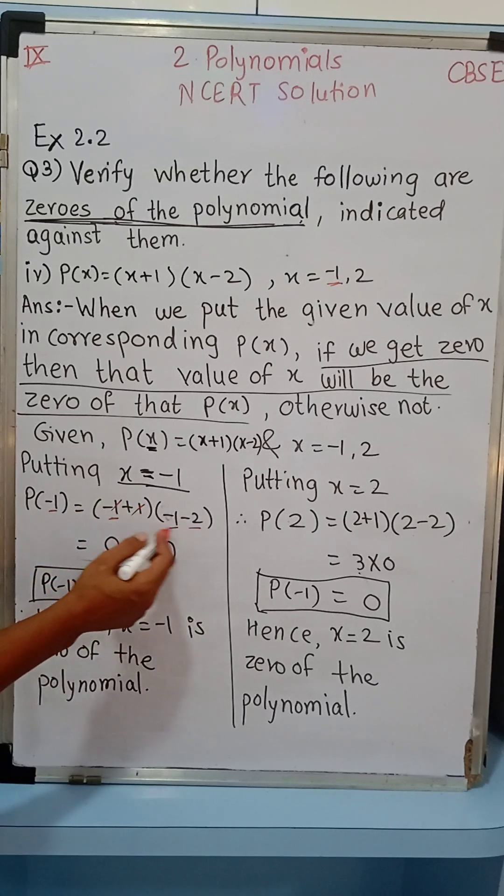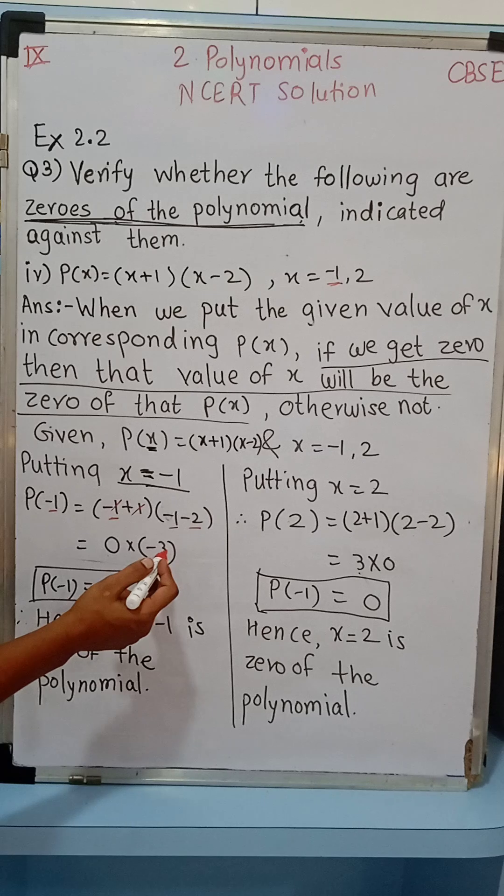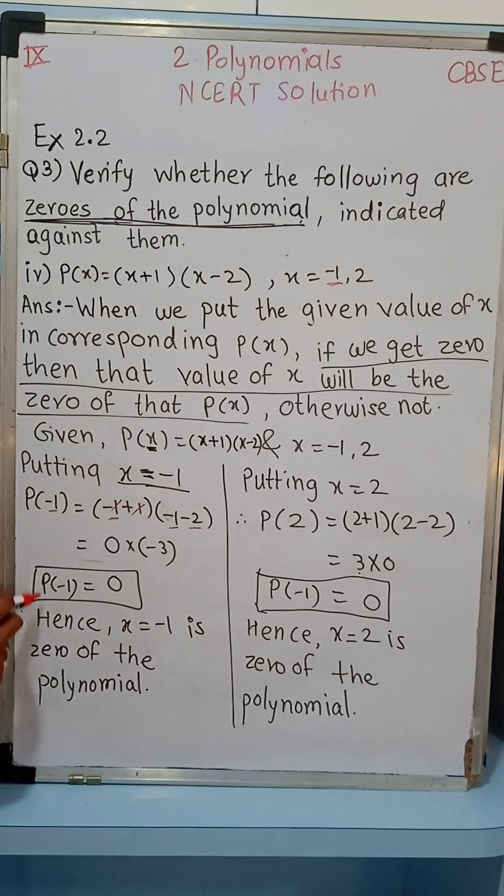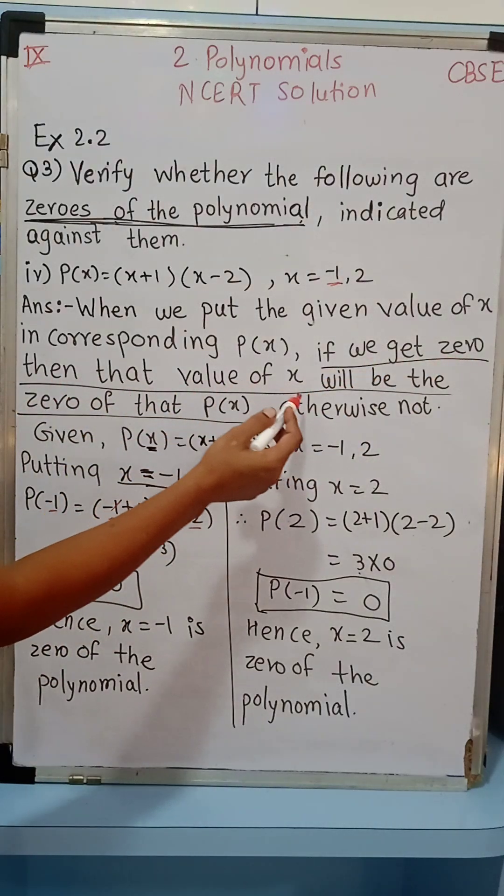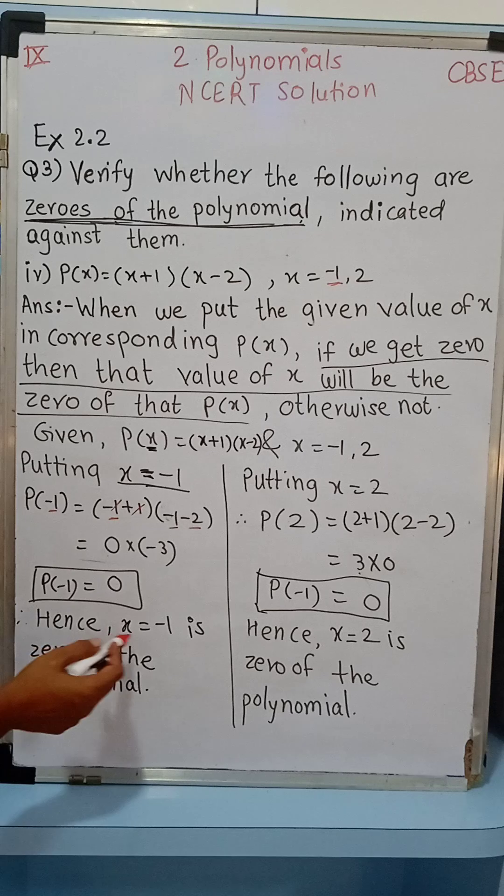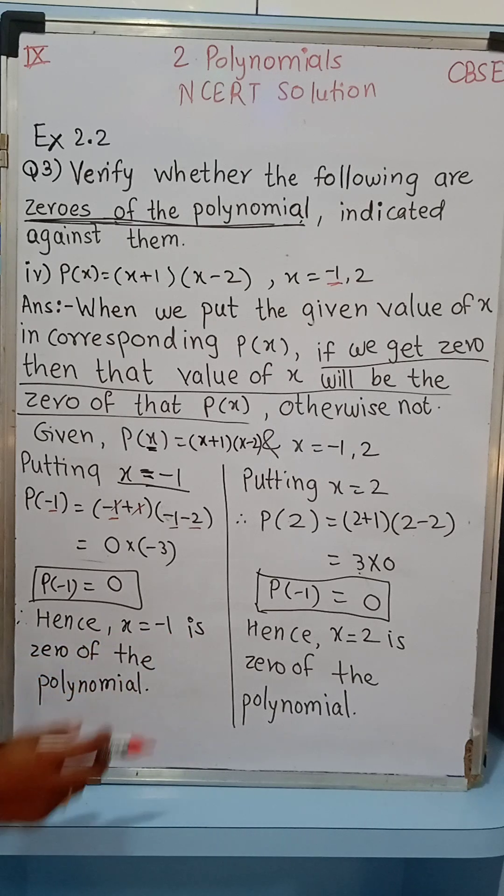Minus 1 minus 2 is same sign, so it will get added. So this is minus 3, minus 3 into 0 is 0 and therefore P(-1) = 0. Hence, as we got 0, then that value of x will be the zero of that polynomial. Hence, x = -1 is the zero of the given polynomial.